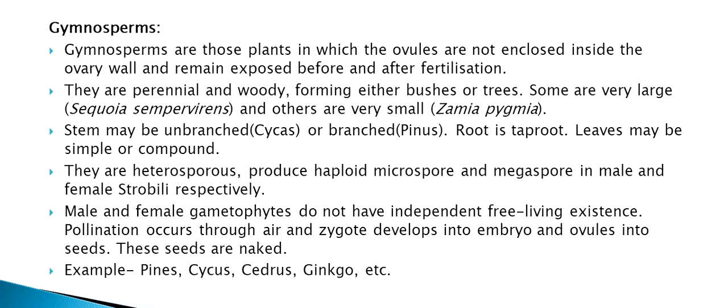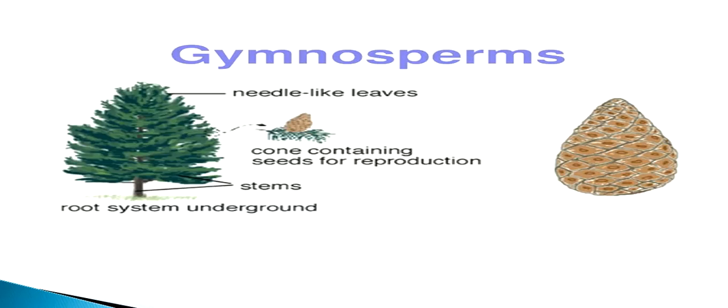Gymnosperms are heterosporous, producing haploid microspores and megaspores in male and female strobili respectively. Male and female gametophytes do not have independent free-living existence. Pollination occurs through air and the zygote develops into an embryo, and ovules into seeds, and these seeds are naked. This figure shows an example of gymnosperms.